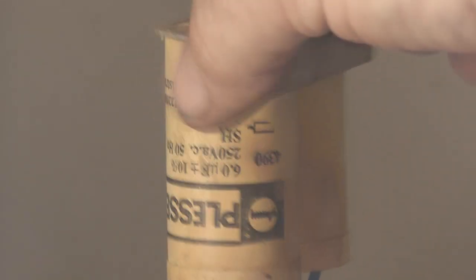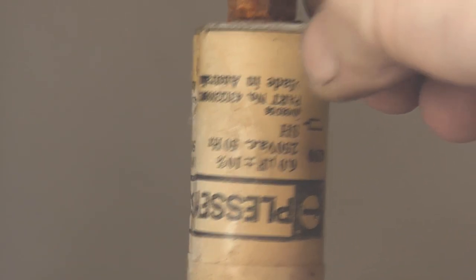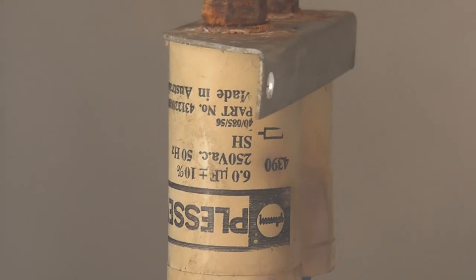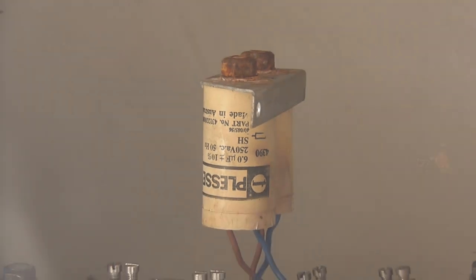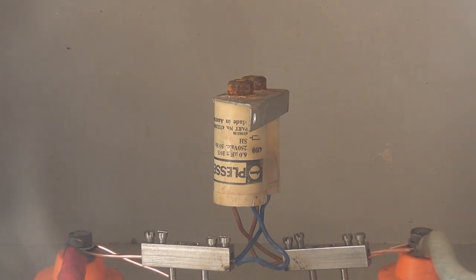Well viewers, last pop for the day. A couple of Plessy capacitors, 6 micro, 250 volts. They come out of a street light module, they look pretty dodgy.